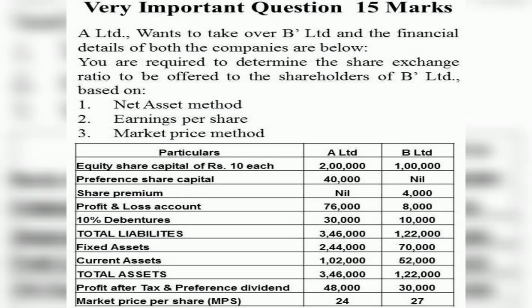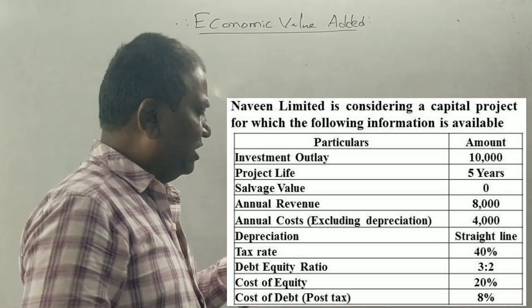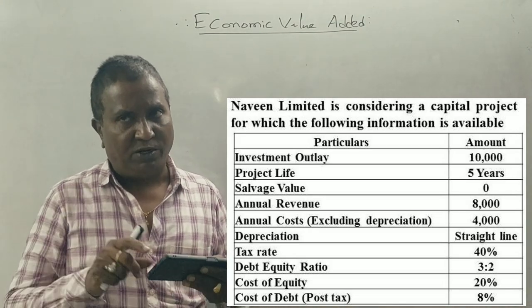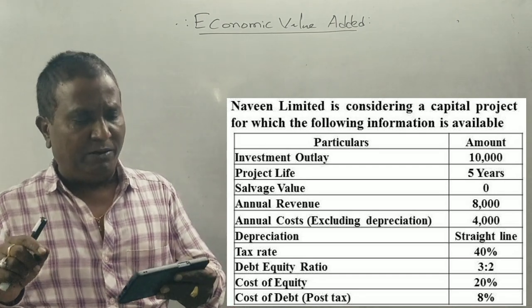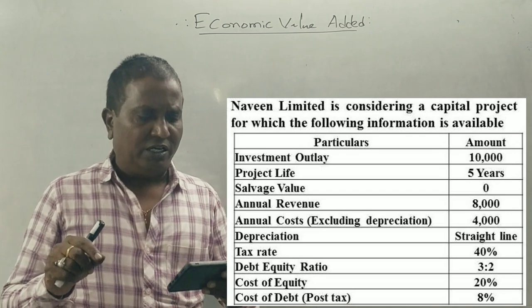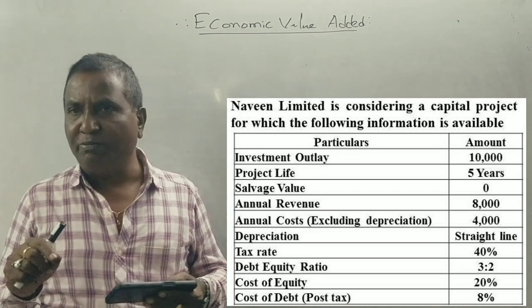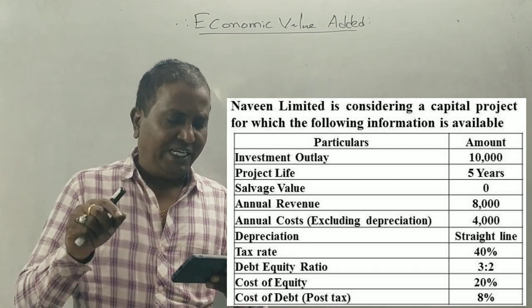Thank you so much for joining us. Navigator Limited is considering a capital project for which the following information is available. Investment outline: total investment is Rs. 10,000. Project life is 5 years.